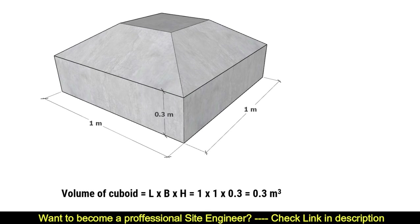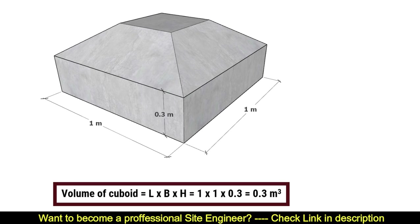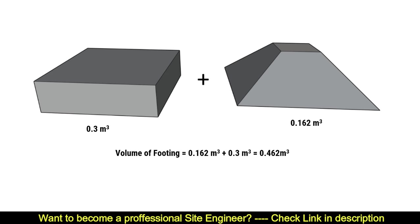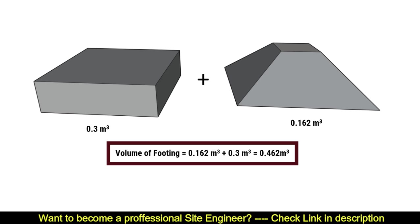Now let's calculate the volume of the cuboid portion. Volume of cuboid equals length into breadth into height, which gives us 0.3 cubic meters. Now add both volumes: 0.162 plus 0.3 equals 0.462 cubic meters. This is the total volume of concrete, or simply the wet volume of concrete.